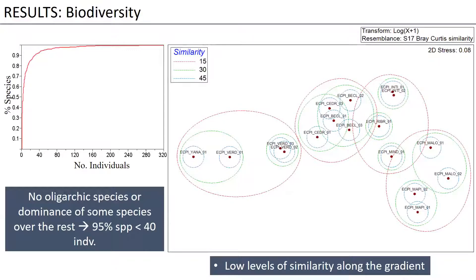In the results section, in terms of biodiversity, we observed that we don't have oligarchic species or dominance of one species over the rest. This is evident in this graph, where we can observe that approximately 95% of the species present less than 40 individuals. In another graph, this is also evident because the similarity in species between communities is low.